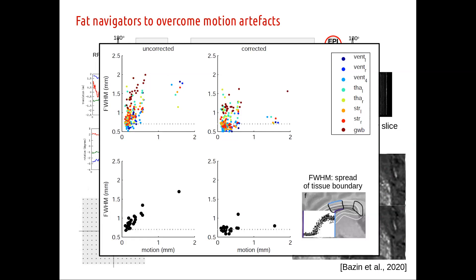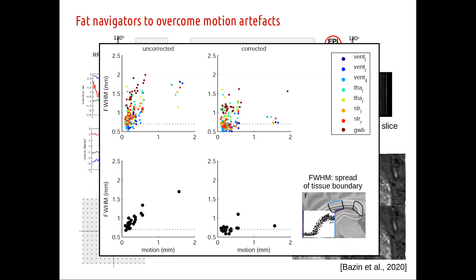We looked specifically at the sharpness of boundaries in terms of anatomical definition. Two interesting results: first, in the bottom left, the amount of motion and the corresponding blurriness of boundaries is very much a linear relationship without correction, but with correction it really flattens. Second, looking at the more colorful figure, that relationship is also very different for different types of boundaries — for instance, the gray matter–white matter boundary is actually fairly smooth and blurred, and that is independent of motion.